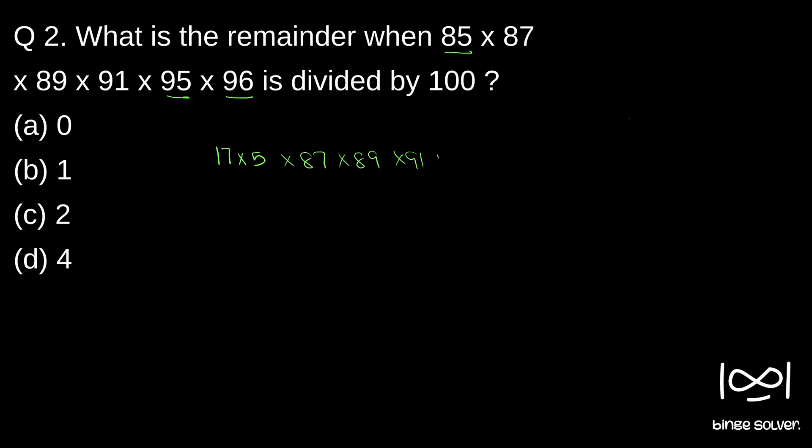And 95, again I take 5 out of it. 95 divided by 5 is 19. 19 × 5.